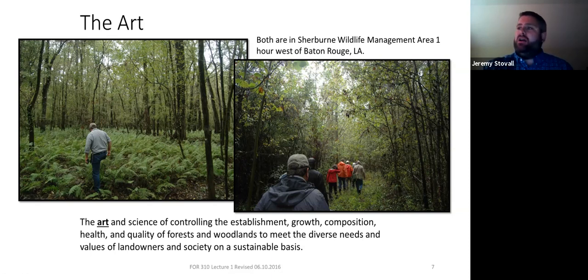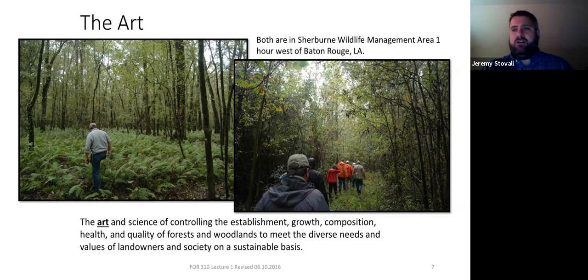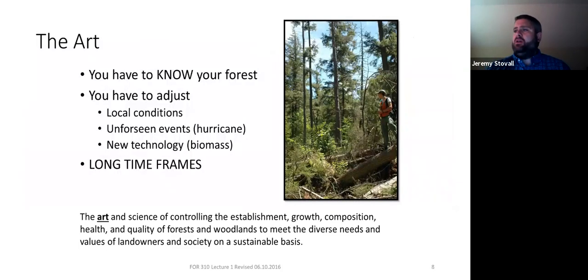We finally decided that what they were doing would be called a group shelterwood — where you start with gaps of regenerating trees and expand them over time by removing the overstory beside them. But each time they got a new forester, they'd take that person out for a few weeks, show them what they were doing, then hand them a paint gun and say: use your own judgment. That's the art of silviculture — blending objectives with what you see on the ground and what's operable. If a tree couldn't be sold to a logger, they might hack-and-squirt or use herbicides to kill it another way.